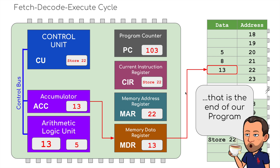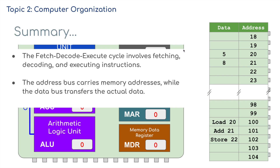That is the end of our program. We've done a simple addition between two values — 5 and 8 — added them together and put them back into memory. We could then save that value to the hard disk or SSD if we wanted. It demonstrates how the CPU talks to the RAM in terms of the fetch-decode-execute cycle. In summary, the fetch-decode-execute cycle involves fetching, decoding, and executing instructions. The address bus carries memory addresses, while the data bus transfers the actual data.